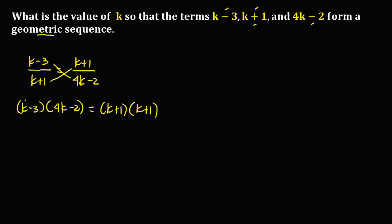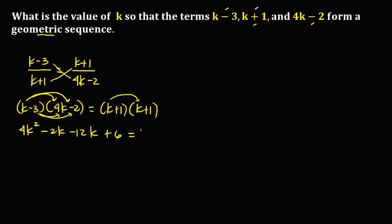Using the FOIL method on the left side: k times 4k is 4k squared, k times negative 2 is negative 2k, negative 3 times 4k is negative 12k, and negative 3 times negative 2 is positive 6. On the right side: k times k is k squared, k times 1 is k, 1 times k is k, and 1 times 1 is positive 1.